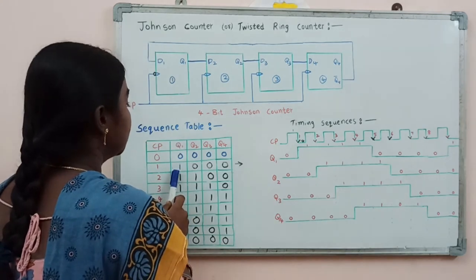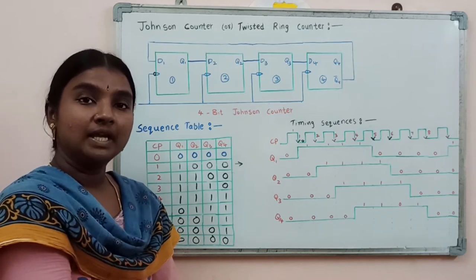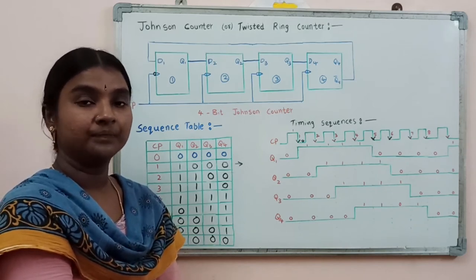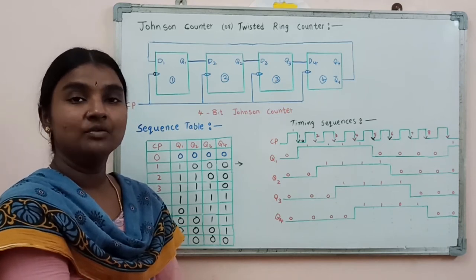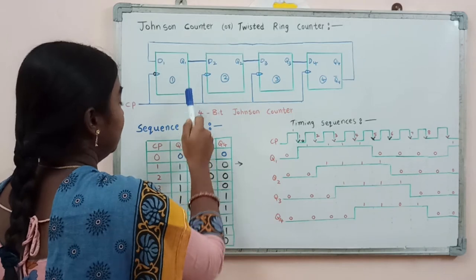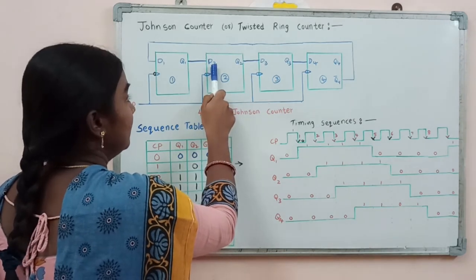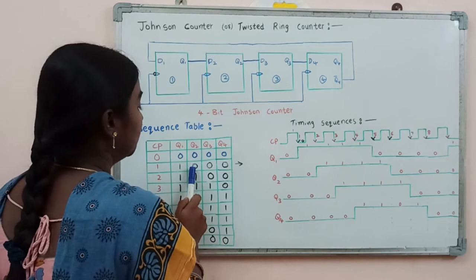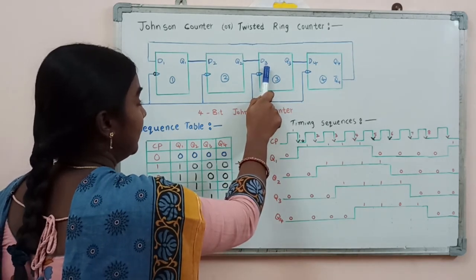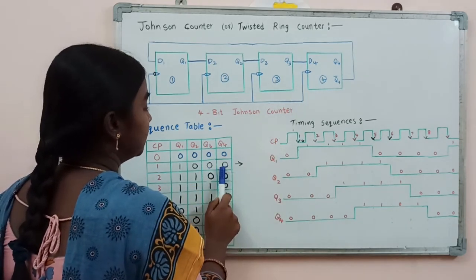By that, Q1 is going to be 1. We know the truth table of the D flip-flop: if we give 0 as input, the output is 0; if we give 1, the output is 1. So Q1 is 1. Before the clock pulse, Q1 was 0, so this 0 is given to the second flip-flop input, making Q2 equal to 0. This Q2 is given to the third flip-flop input, so Q3 will be 0. Similarly, Q4 is also 0.